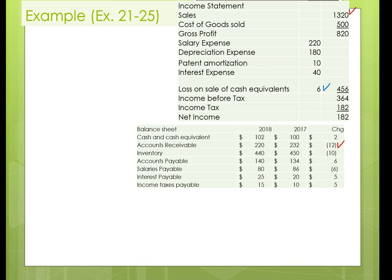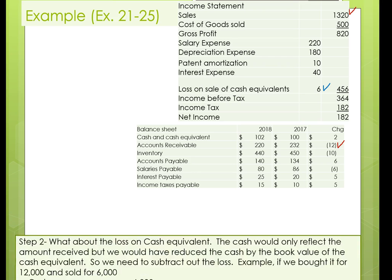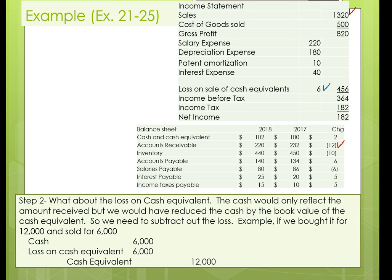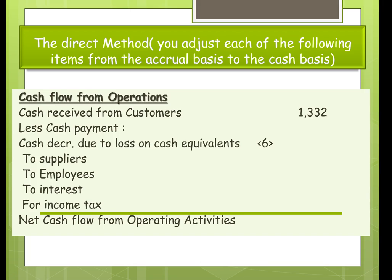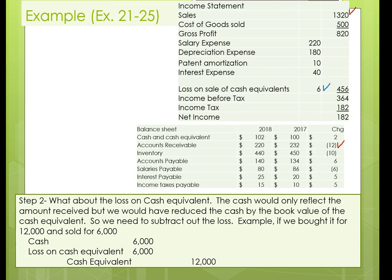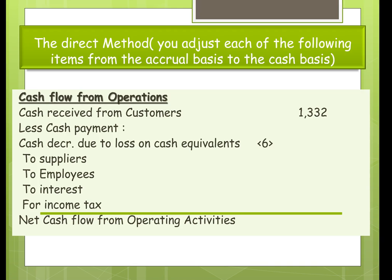There is one special issue in this problem: we have a loss on the sale of a cash equivalent. Normally we don't worry about gains or losses, but when it involves the cash account, the direct method requires us to adjust for it. Since it was a loss, we subtract it out. In this example, we took out $12,000 in cash equivalents but only received $6,000 in cash, so we back out that $6,000.